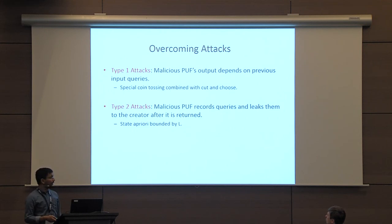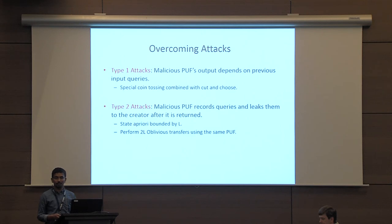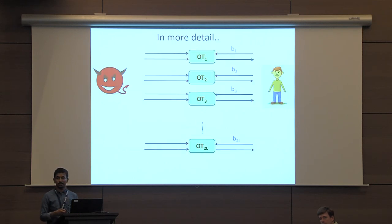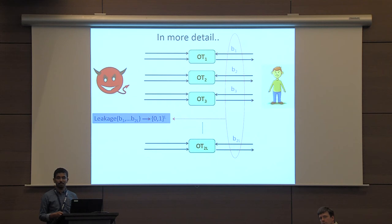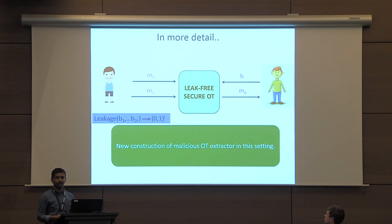The first type of attacks involve a malicious PUF basing its output on previous input queries. We use special coin-tossing combined with cut-and-choose to solve this. The second type involves a malicious PUF recording queries and leaking them back to the creator. Suppose the PUF state is a priori bounded by L bits, where L is some polynomial in the security parameter. We perform 2L oblivious transfer protocols between sender and receiver using the same PUF. This translates to a one-sided malicious OT extractor setting, where the sender gets an L-bit leakage function of the receiver's 2L choice bits. We give a new construction of a malicious OT extractor in this setting, yielding a leak-free secure OT.